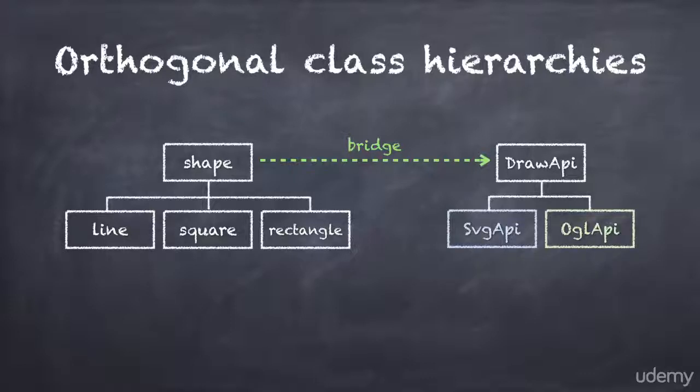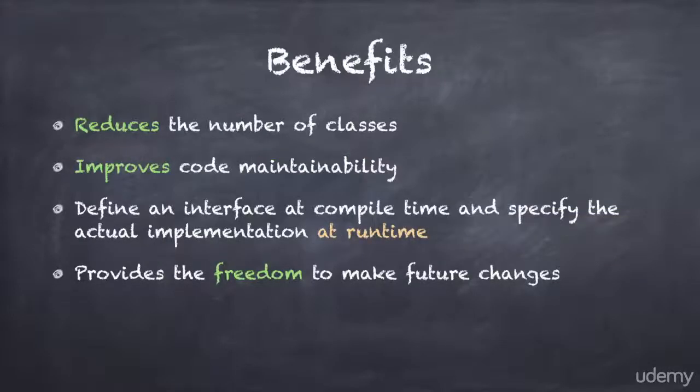By initializing a shape with different API instances, you can make any shape draw itself on any API. A big benefit of the bridge pattern is that it reduces the number of classes. In the previous example, I needed 10 classes to draw my three shapes on two platforms. But with the bridge pattern, I've cut the number of classes down to 7.